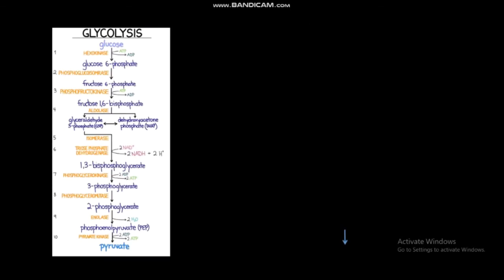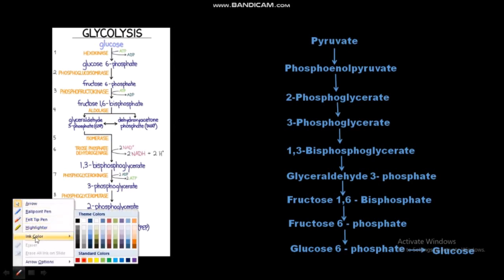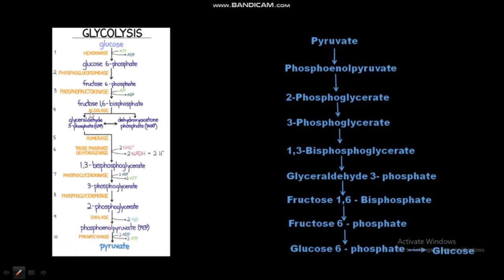Gluconeogenesis closely resembles the reverse pathway of glycolysis; however, it is not a complete reversal of glycolysis. Three steps of glycolysis are irreversible and require special mechanisms or specific enzymes to be reversed. These steps are step number one, step number three, and step number ten.